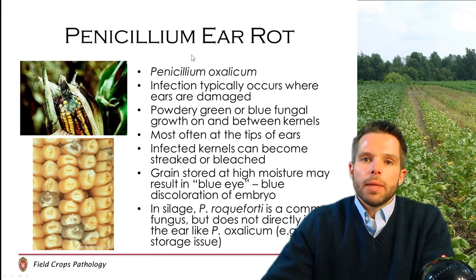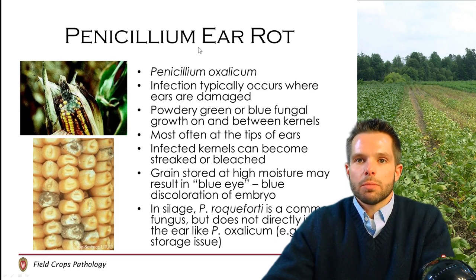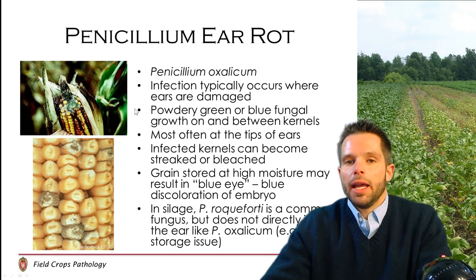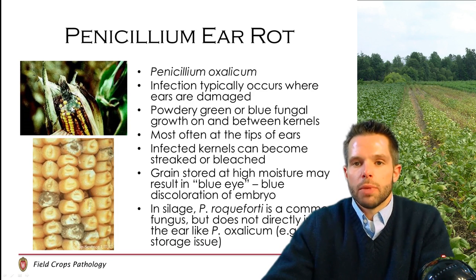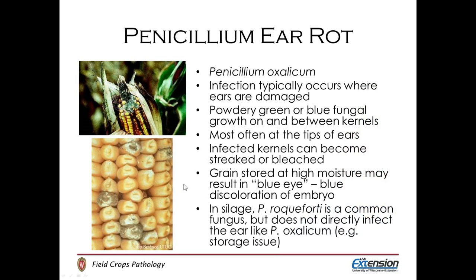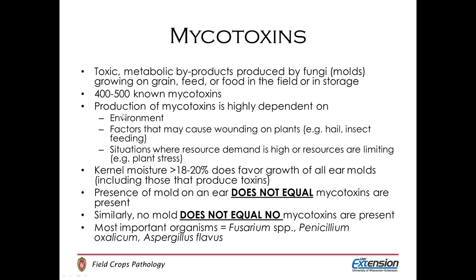Penicillium ear rot, while not as common as Fusarium ear rot, is also seen on occasion. Infections typically occur where ears are damaged, producing a powdery green or blue fungal growth, which is quite different from that produced by Aspergillus. It is most often seen at the tips of ears, and it can be an issue in grain stored at high moisture — if you take grain in the 20% moisture range and store it without drying, this fungus can continue to grow. In silage, Penicillium can also grow if silage is not stored correctly.